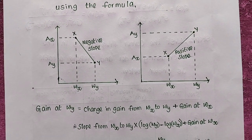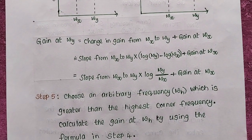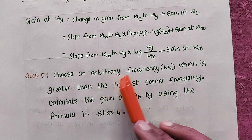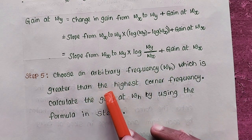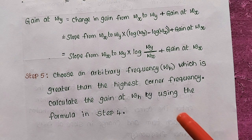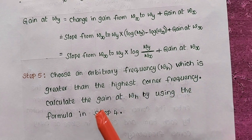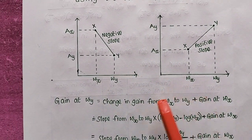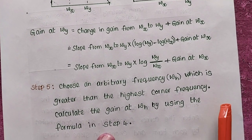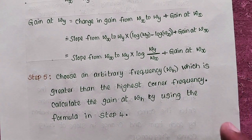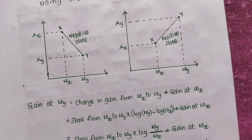That completes Step 4 — finding the gain at each corner frequency. Step 5: After finding the gains at all corner frequencies, choose another arbitrary frequency ωh which is greater than the highest corner frequency, and calculate the gain at ωh using the same formula from Step 4.